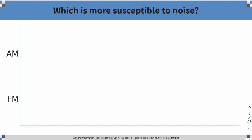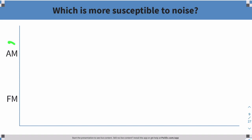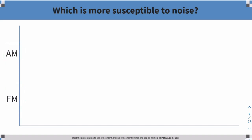Before we start, which is more susceptible to noise — AM or FM? By susceptible we mean vulnerable — which is more affected by noise? In AM, the carrier amplitude varies with the amplitude of your message. In FM, you have a constant amplitude but the frequency varies. Which of these two signals do you think is more affected by noise? Remember, noise is additive — it adds itself to the signal and affects the amplitude.